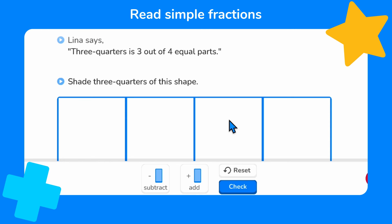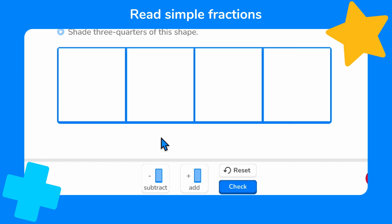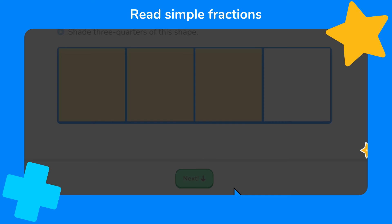Lena has reminded us that three quarters is the same as three out of four equal parts. We can see that there are one, two, three, four parts in total and we know that we need to shade one, two, three to show three quarters. Let's check that. Great job!